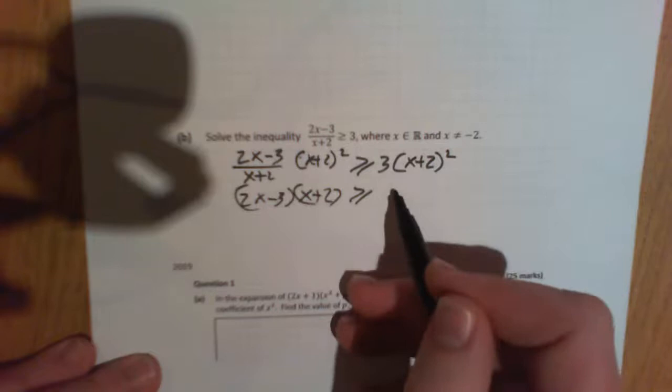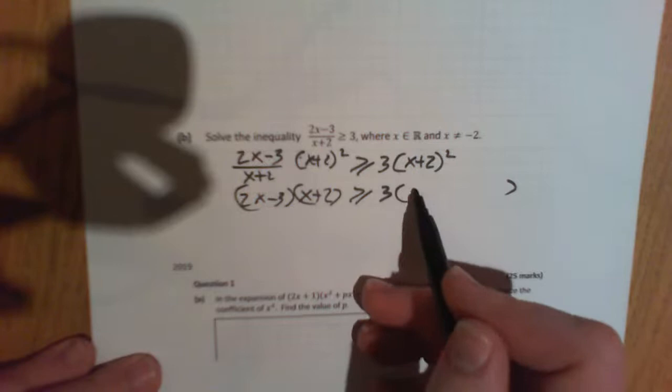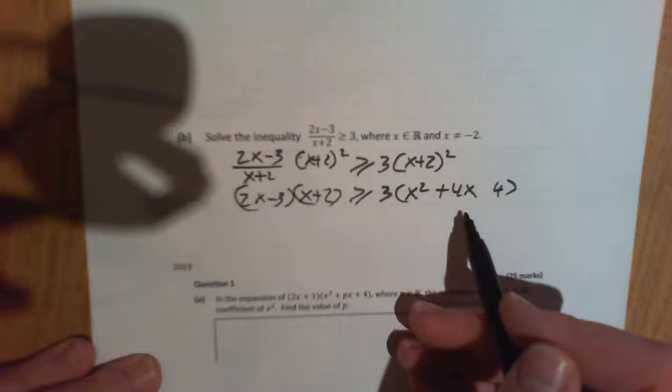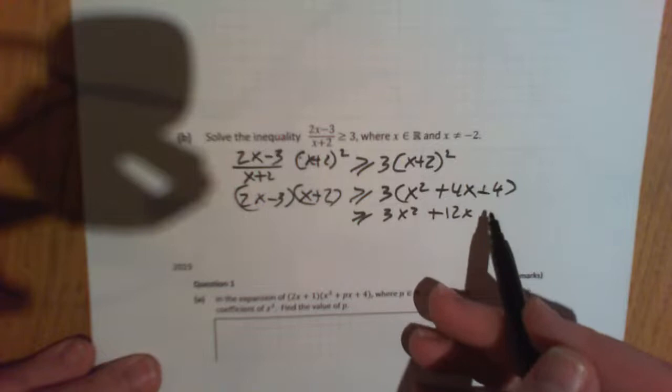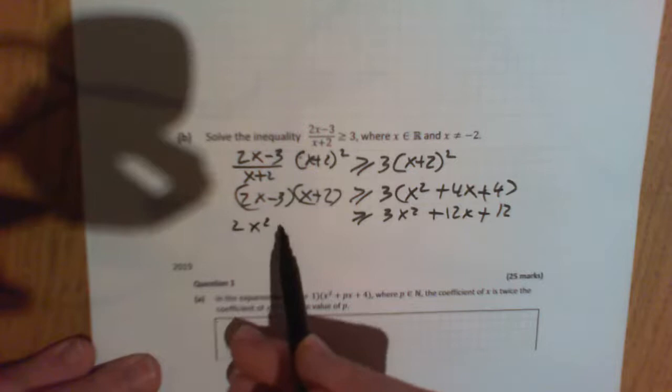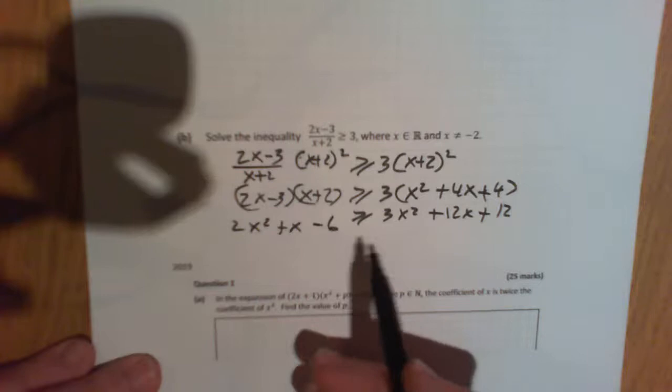And on the right-hand side, we're going to get 3 times, let's expand this a little bit. We're going to have 3 times square to the left, square to the right with the pattern together and double it. Okay. So that's going to be 3x squared plus 12x plus 12. And on this side, we're going to have 2x squared plus x minus 6.